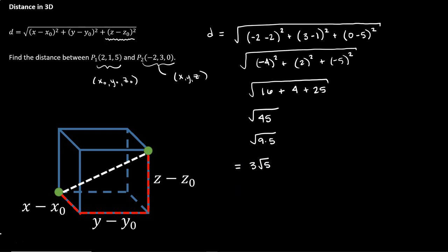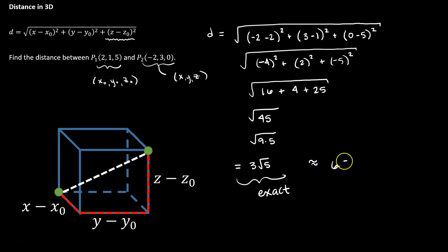Using the adjusted distance formula, we found that point 1 and point 2 are a distance of 3√5 apart. That is our exact answer. If we want an approximate value, we can convert that to a decimal: about 6.71. Since we don't have specific units, we would just say 6.71 units.